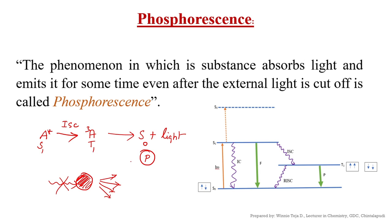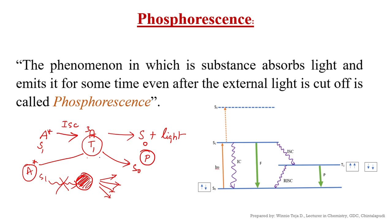How is this possible? It is possible because there is a spin conversion — from S1 it converts to T1, and from T1 it comes to S0. There is a barrier that the molecule must cross from S1 to T1 and then from T1 down to S0. It takes some time, which is why emission of light is possible even after the absorption of light source is removed — even after the external light is cut off.